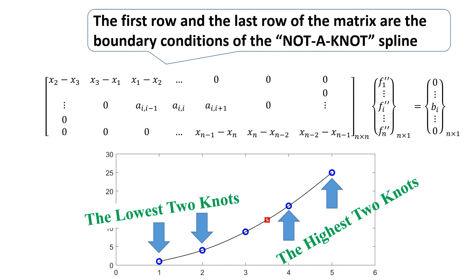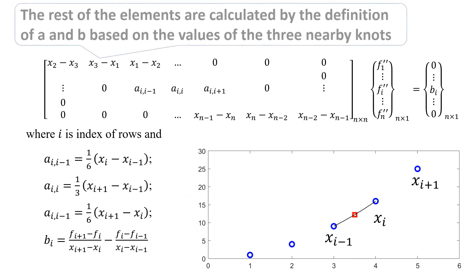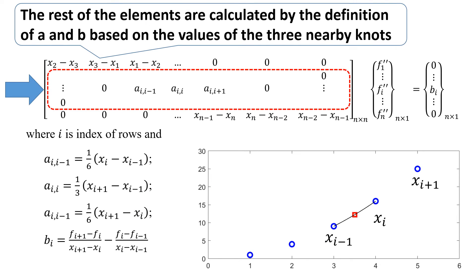The first row and the last row of the matrix are the boundary conditions of the not-a-knot spline. The rest of the elements are calculated by the definition of a and b, based on the values of the three nearby knots.